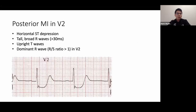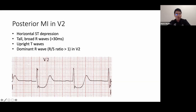For posterior MI suspicion, note that no standard 12-lead EKG lead is dedicated to the posterior wall — anterior leads evaluate it indirectly as reciprocal leads. In V1 and especially V2, look for horizontal ST depression, a tall broad R-wave more than 30 milliseconds, upright tall T-waves, and a dominant R-wave larger than the S-wave. These findings suggest possible posterior MI.